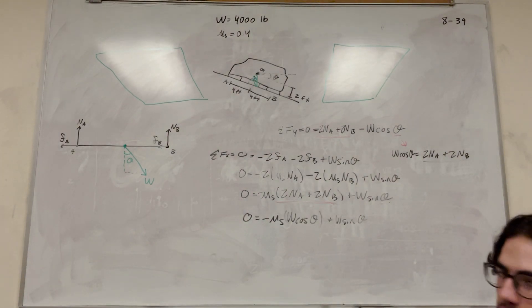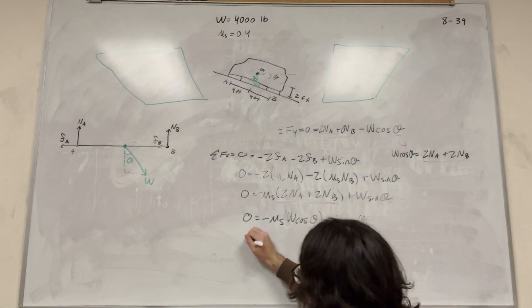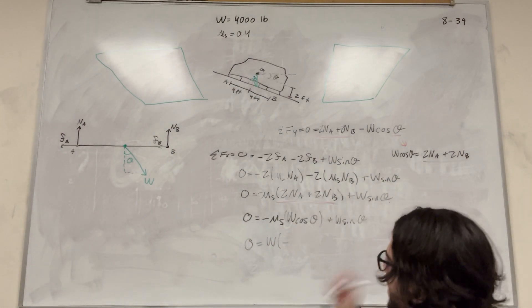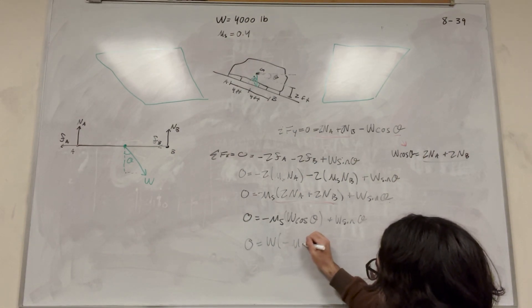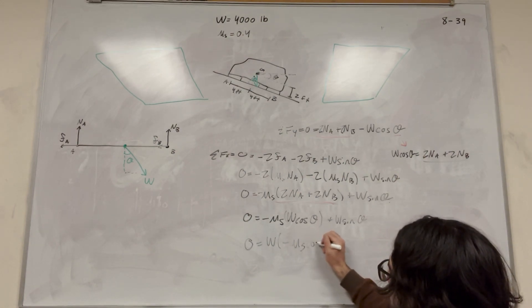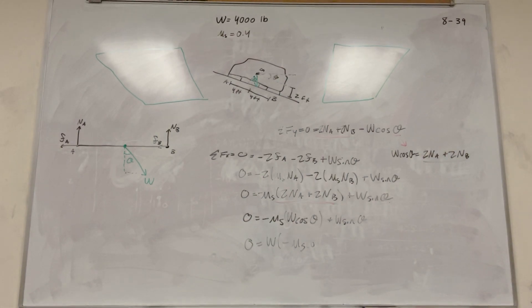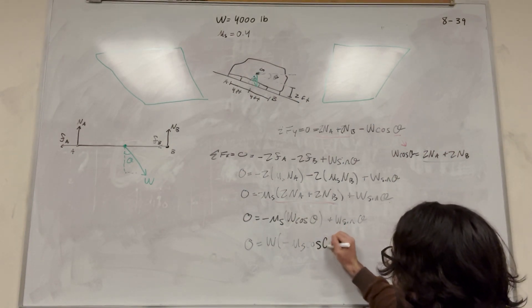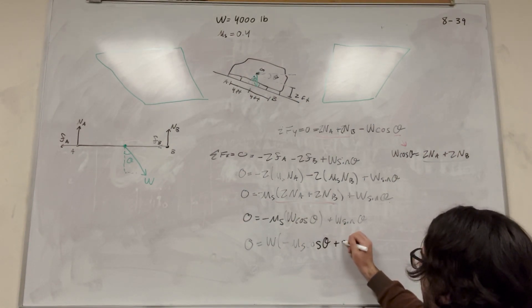Plus W sine of theta. So now all we have to do is simplify this. So let's bring out the W. So the W comes out. It'll be negative coefficient of static friction, cosine of theta, cosine of theta plus sine of theta.